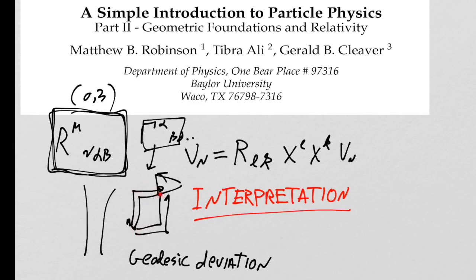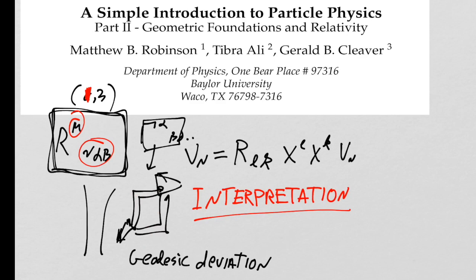Likewise, if we parallel transport a vector from one point around a little loop, it doesn't return as the same vector. It's a 1,3 tensor. The point is that this tensor can be understood as informing us about properties of spacetime that are easy to understand once you grasp geodesics — the geodesic deviation and parallel transport idea — and that interpretation dropped directly from its derivation.